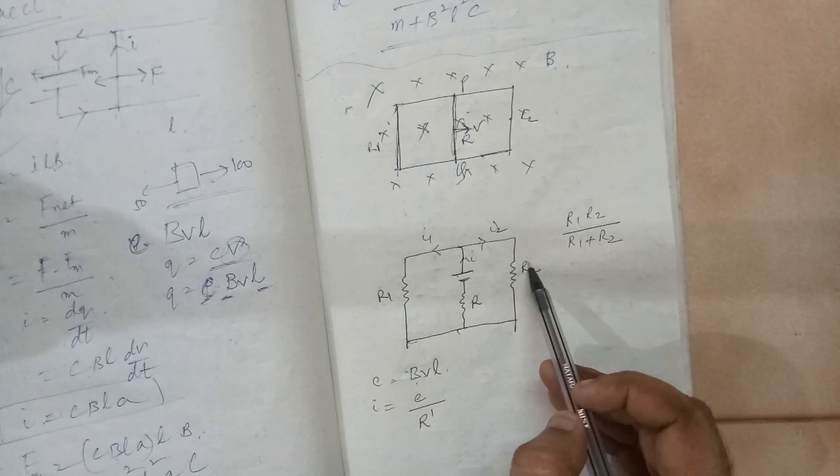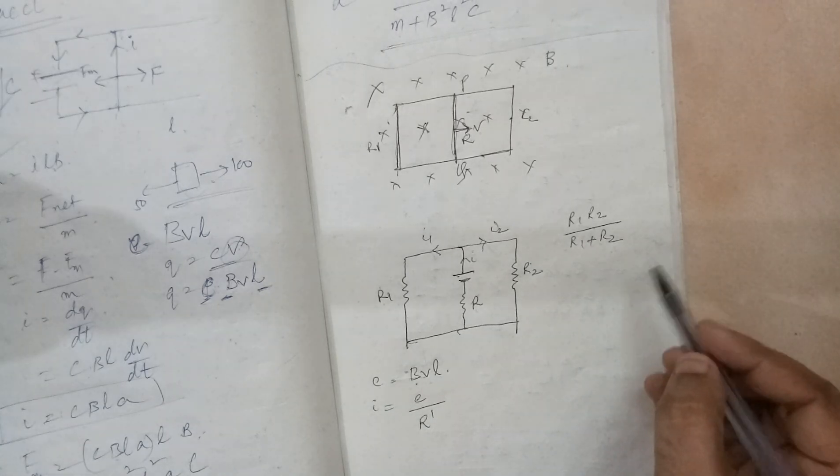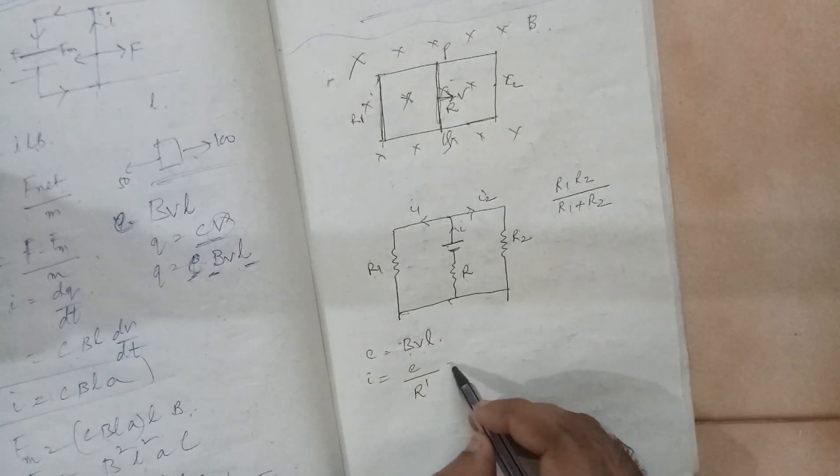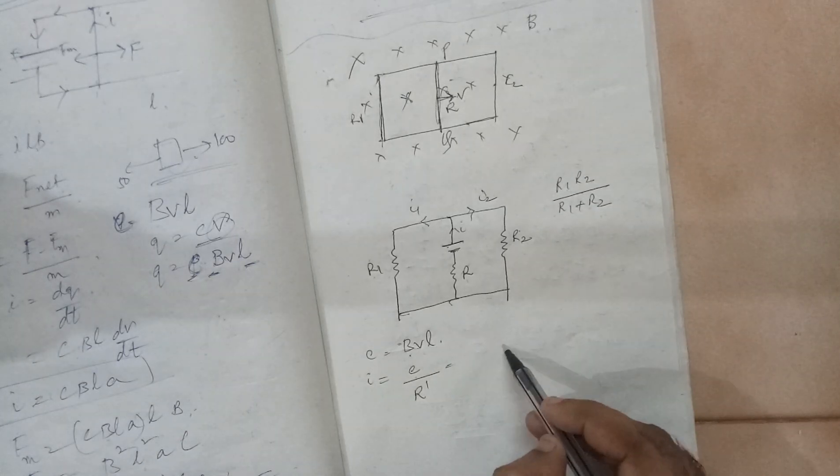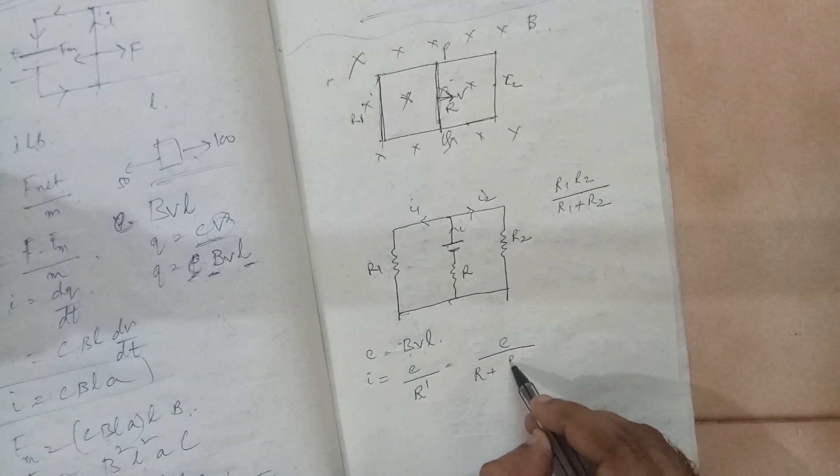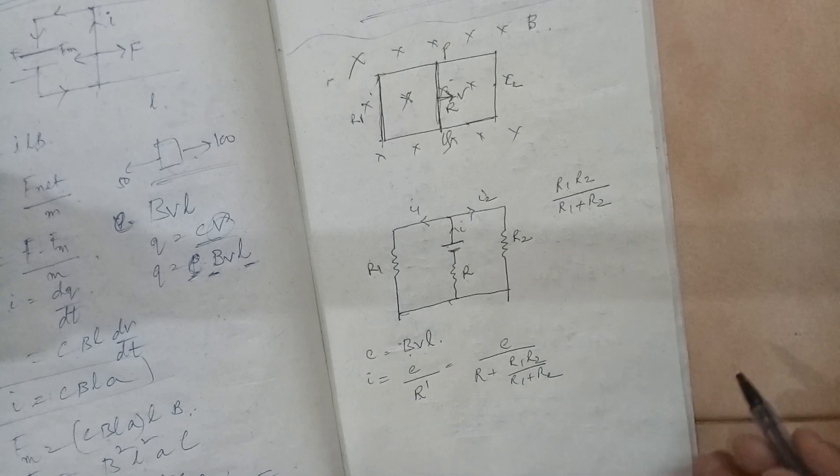These two combined is this. This is in series with R. So the R dash value will be E divided by R plus R1, R2 divided by R1 plus R2.